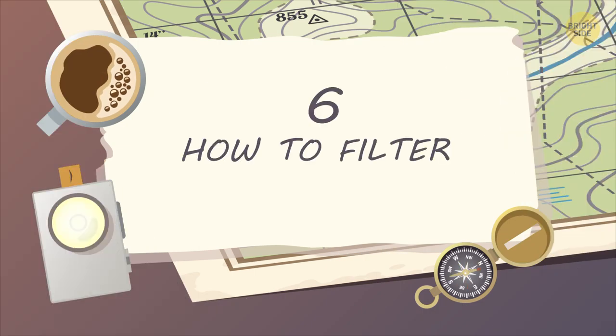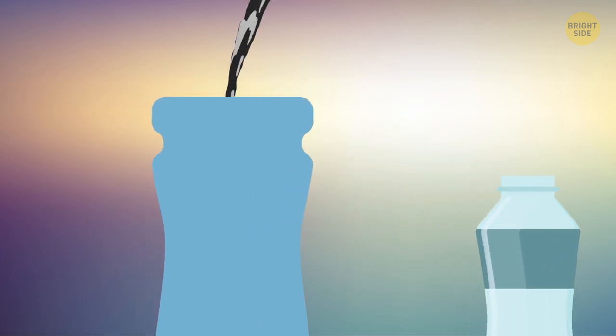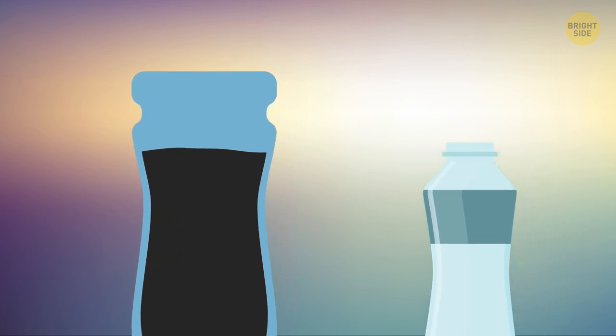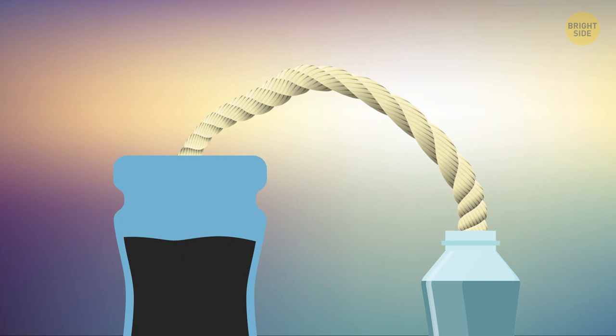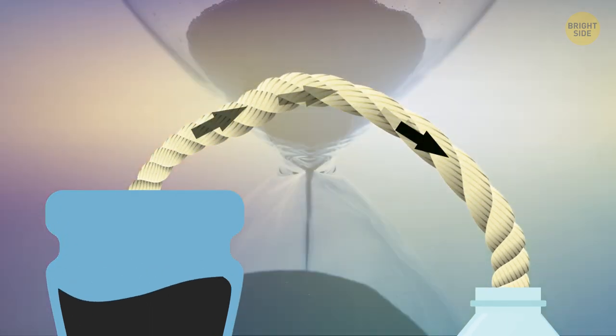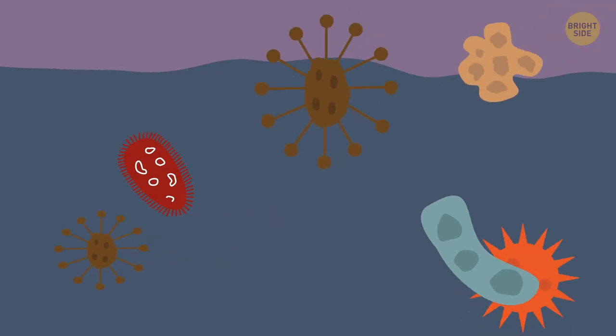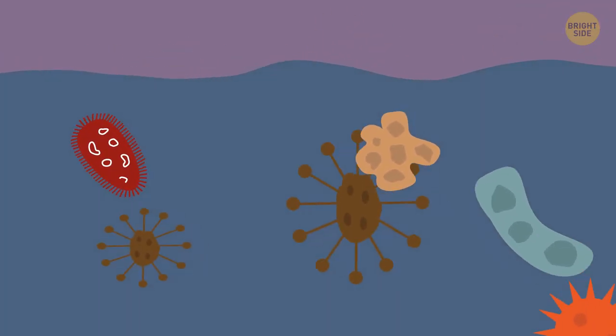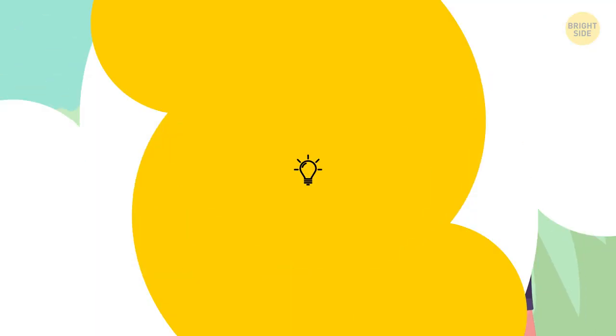6. How to filter dirty water. Take two containers, one a bit taller than the other. Fill the tall container with dirty water. Twist a piece of cloth and put one end of it into the filled container, feeding the other into the empty one. It will take some time, but a piece of cloth will soak up all the moisture and transport it from one vessel to the other. Good news is, all the dirt and debris will be lost in the process. Don't forget to boil the water to further assure your safety.